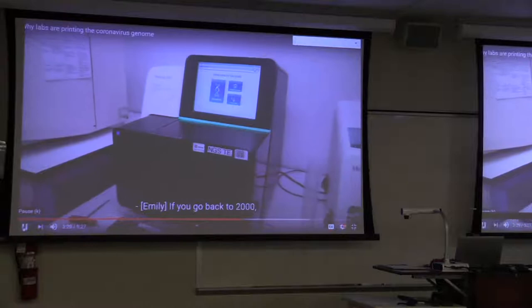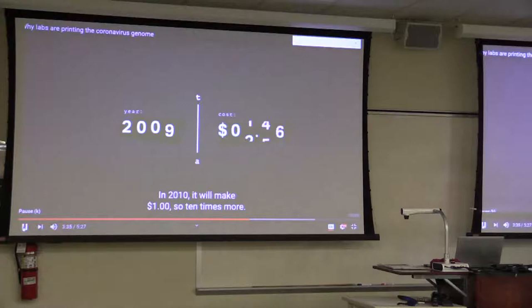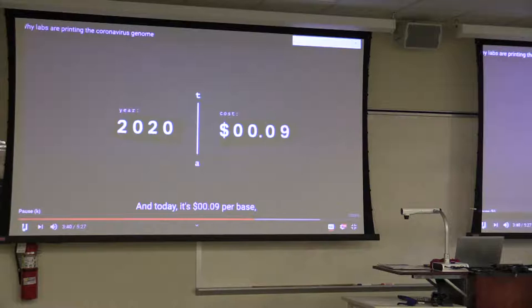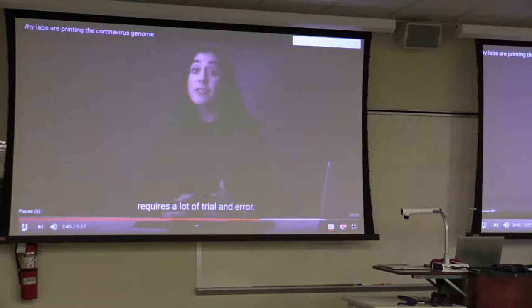If you go back to 2000, it would take ten dollars to make one base of DNA. In 2010, it would make one dollar, so ten times more. And today, it's nine cents per base, so again, ten times more. That's important because this kind of research requires a lot of trial and error. So the more copies of a gene scientists have, the better. So it's biology. And in biology, it almost never works on the first time. You have to take a lot of shots on goals to get there. It gives people the opportunity to take more shots on goals faster. And that way, they can get to that answer faster.